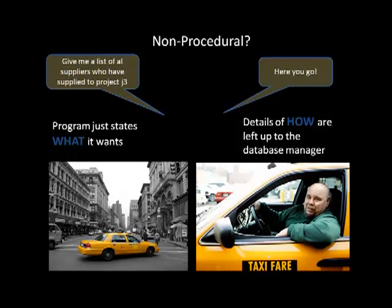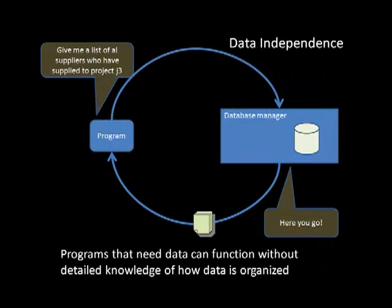Because you've given the responsibility to somebody else — the database manager or the cab driver decides how to navigate your request. That is the beauty of non-procedural. And this non-procedural approach is possible simply because of the relational model. There were other database models that came before the relational model where non-procedural query languages were not possible. The second point is that the relational model preserves what is called data independence — meaning if the organization of data changes, the program is not affected, because the program never got involved with those details. The program simply says give me this, and the database manager figures out how to give that. The details that have changed do not affect you. That is data independence. These are two very important advantages of the relational database model.